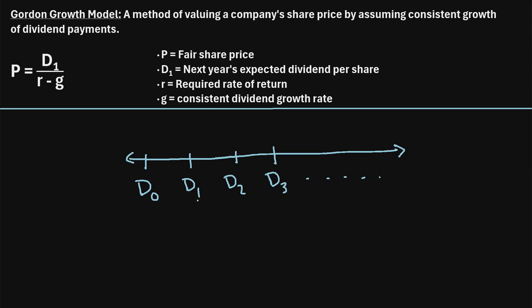Another assumption we're making is that the value of these dividends is growing by a consistent rate each year. So if one year from now the dividend is going to be $1, and it grows by 10%, then two years from now they're going to pay us $1.10. And then if it grows by another 10%, in year three they're going to pay us $1.21. So each year we're assuming consistent dividend growth.